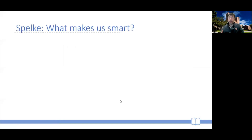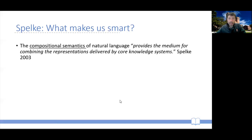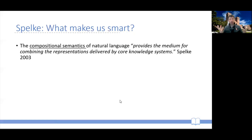This is where there's a discontinuity between us and other species, according to Spelke's theory. The idea, as we said earlier, is that it's really the compositional semantics of natural language. As Liz Spelke says, language provides the medium for combining the representations delivered by core knowledge systems. By having natural language, we can now combine the representations of the two modules, creating more than what we have with the individual modules.